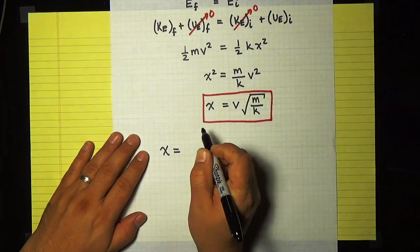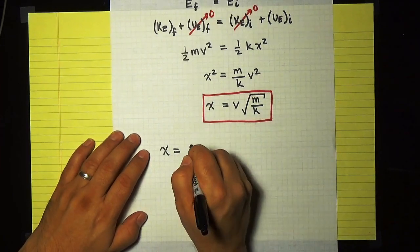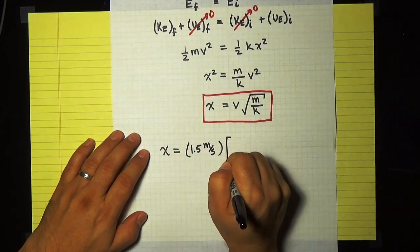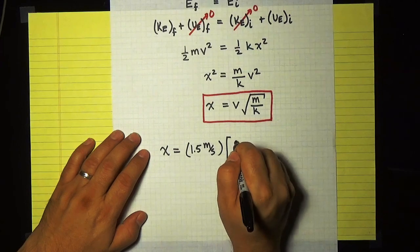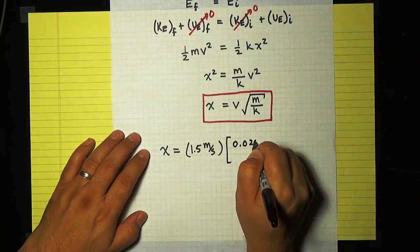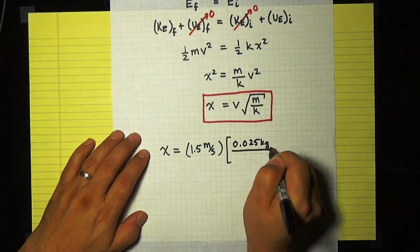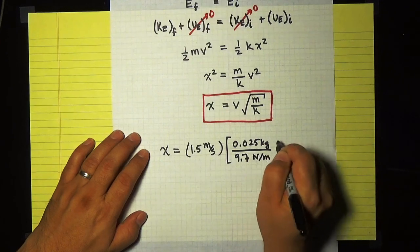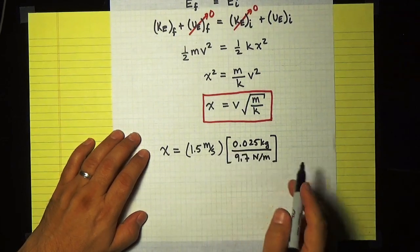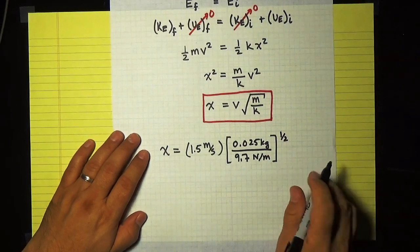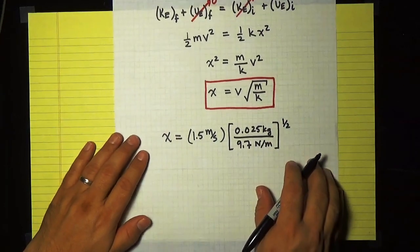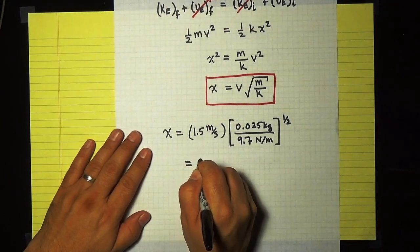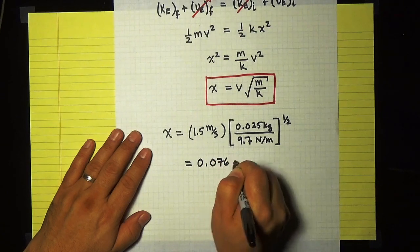So the compression of the spring is given by the numbers that we're told. The initial speed is 1.5 meters per second. The mass of the dart is 25 grams, which is 0.025 kilograms. And the spring constant, we're told, is 9.7 newtons per meter. You'll notice I've done everything completely in SI units here, in kilograms, meters, and seconds. And that's all to the one-half power. And so if I punch those into the calculator, I get that the compression of the spring is 0.076 meters.